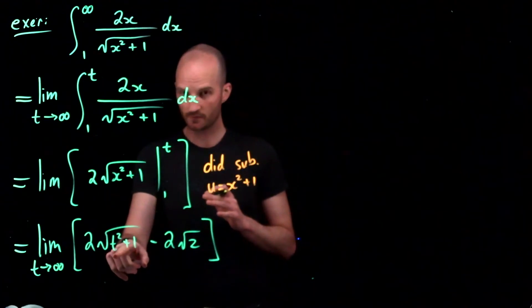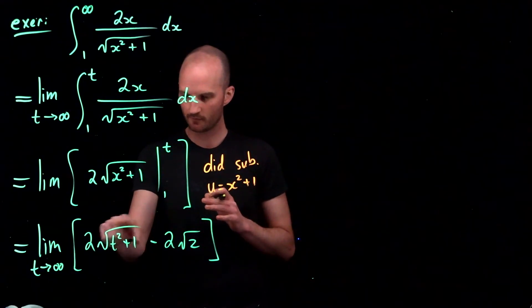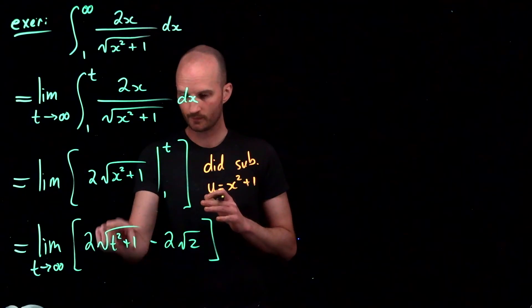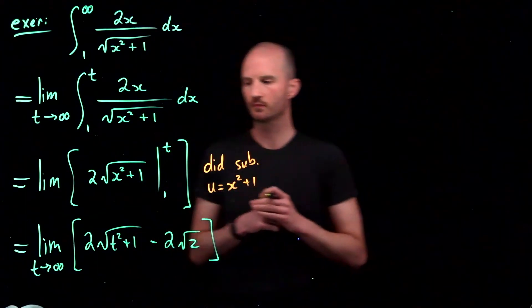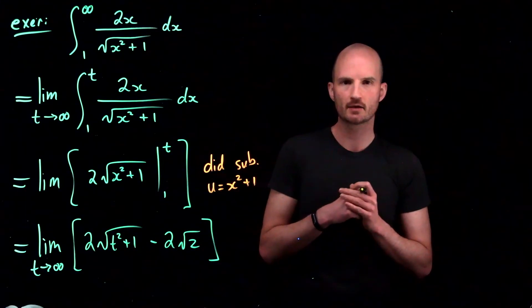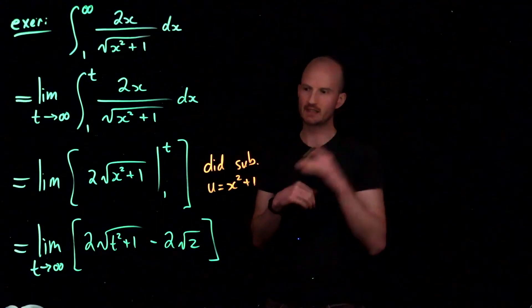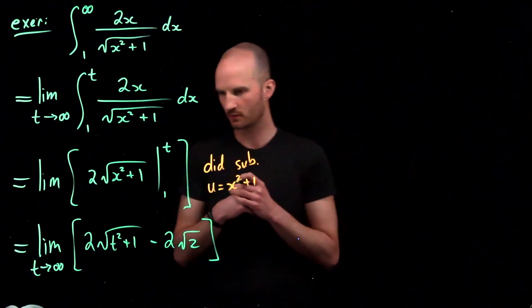So here, t is going to infinity. So you have this expression growing and growing and growing. So square root of t squared plus 1. Is there any ceiling on that? Is there a maximum that it reaches? No, there is not. It just grows and grows and grows.